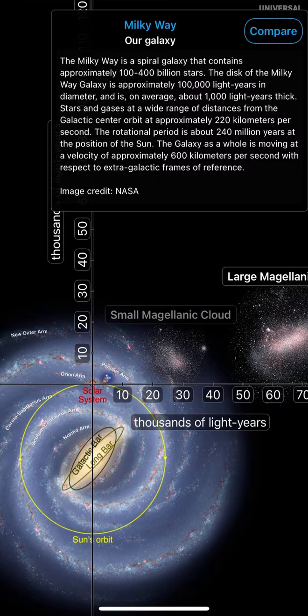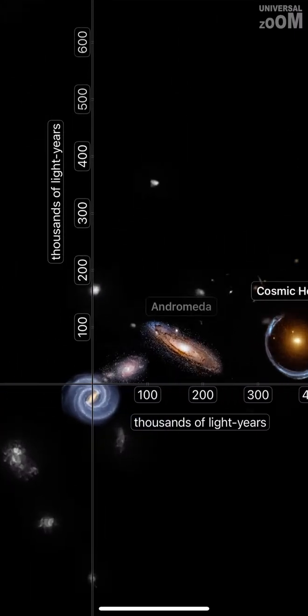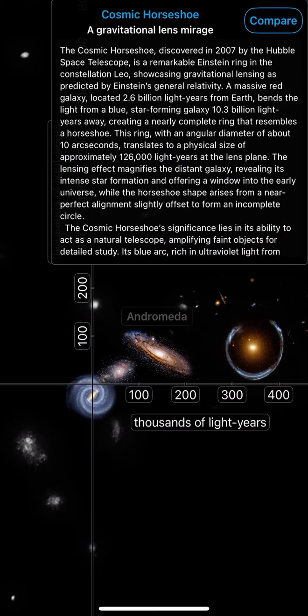Milky Way, our galaxy. The Milky Way is a spiral galaxy that contains approximately 100-400 billion stars. Andromeda, the nearest large galaxy to the Milky Way. Cosmic Horseshoe, a gravitational lens mirage.